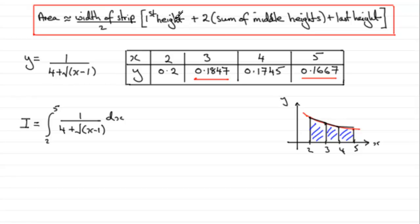And then it's the first height, it'll be this height here, plus twice the sum of the middle heights, that'll be twice this height plus this height, and then plus the last height.